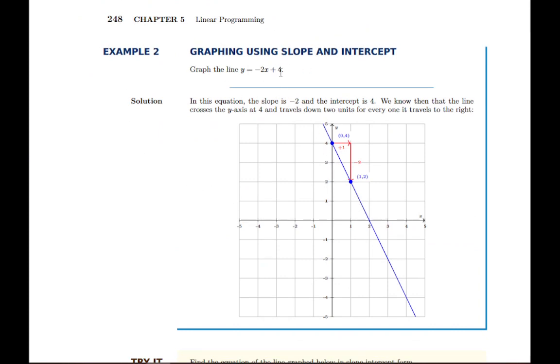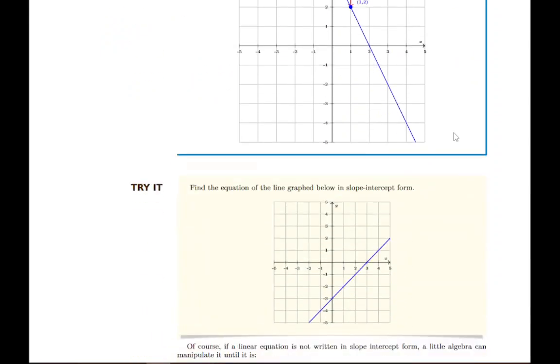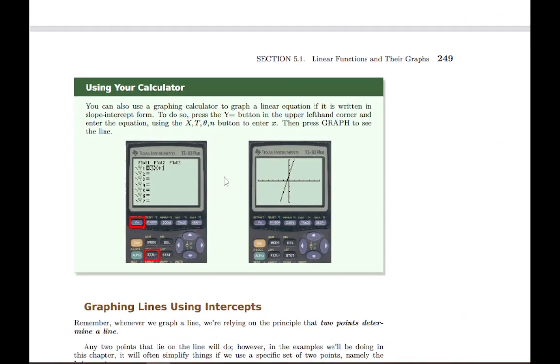Like this example has here, the intercept is 4, so we start at a y-intercept of 4, meaning the point (0, 4). Then a slope of negative 2 means we go one to the right and two down, and that gives us our second point. Connecting those gives us the whole line all together.